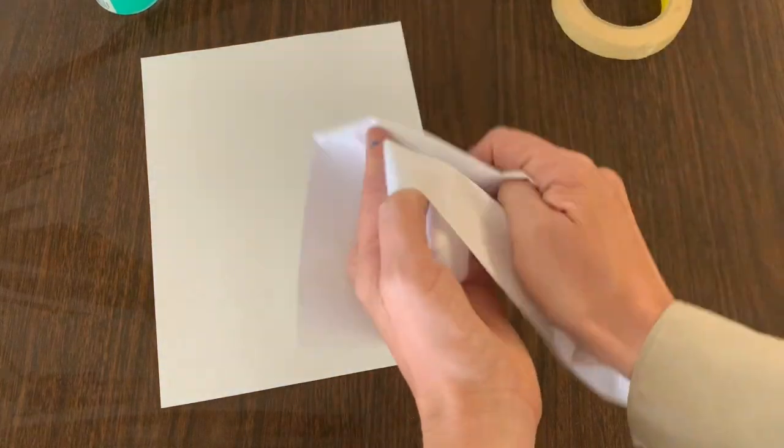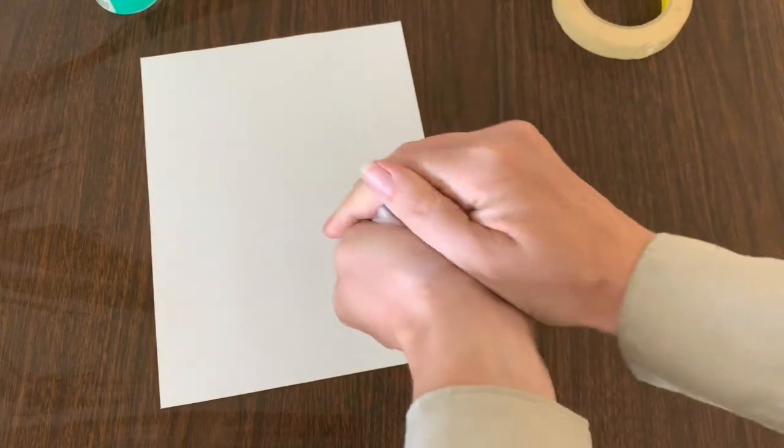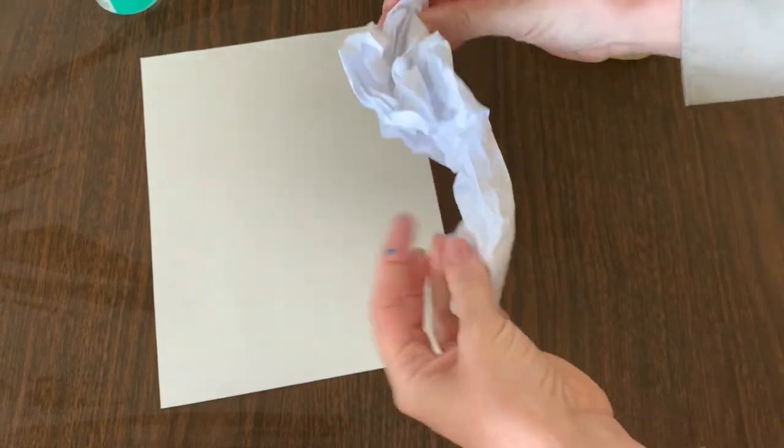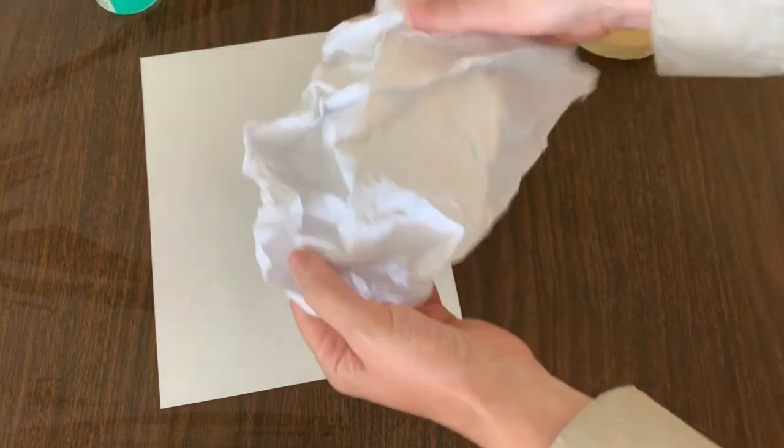Take one piece of white paper and crumple it up into a ball, trying to get it full of wrinkles just like before. Smooth it back out to make sure that it has plenty of texture.